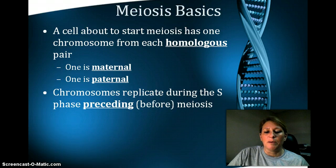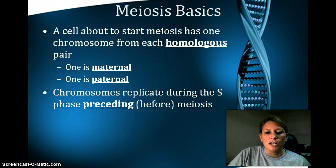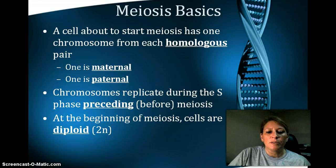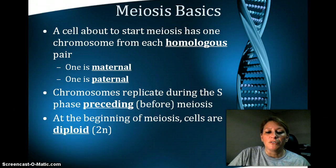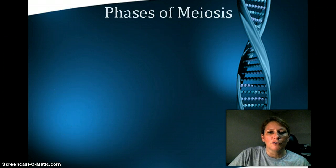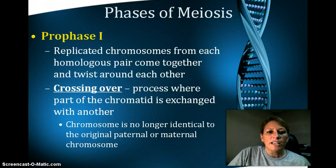The four steps are still going to be the same — PMAT — but we'll cover that in just a moment. The chromosomes are going to replicate during the S phase preceding, which means to come before, meiosis. So at the beginning of meiosis, the total number of chromosomes for a particular individual will be what's called diploid. Di means 2, N is the number of chromosomes. For a human, the diploid number would be 46.